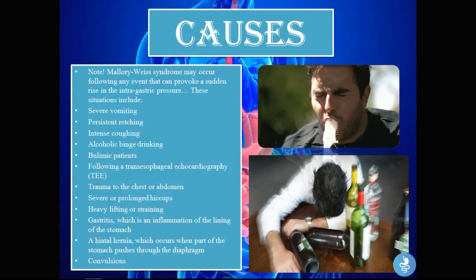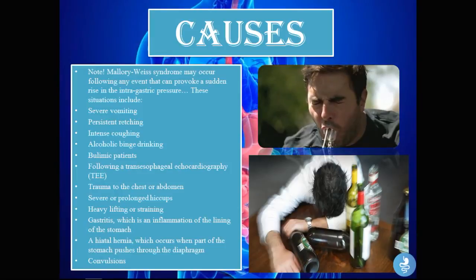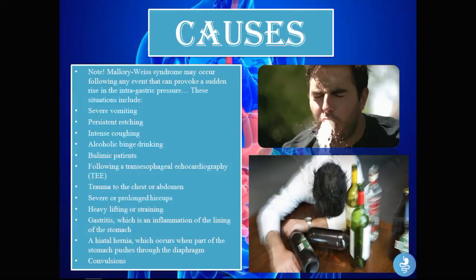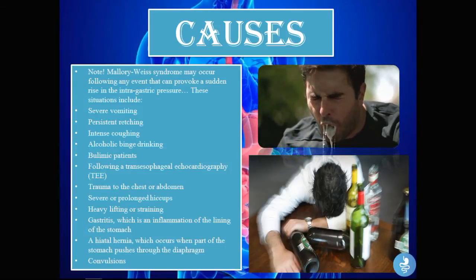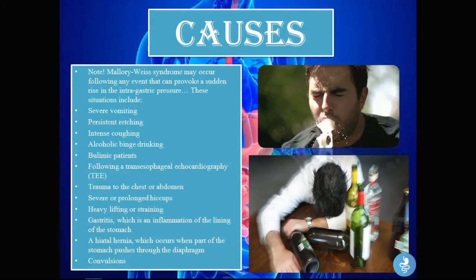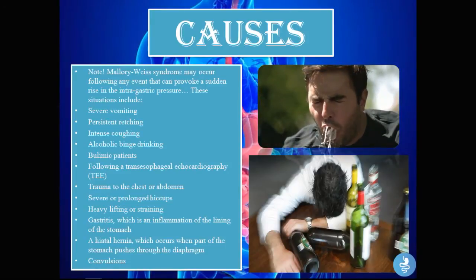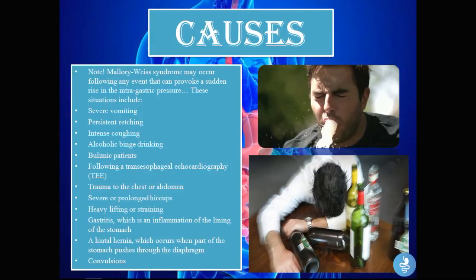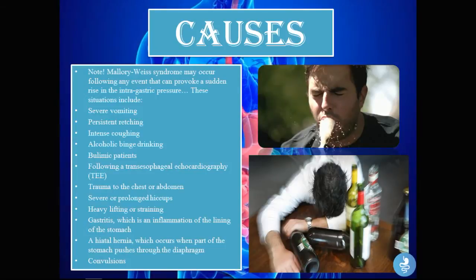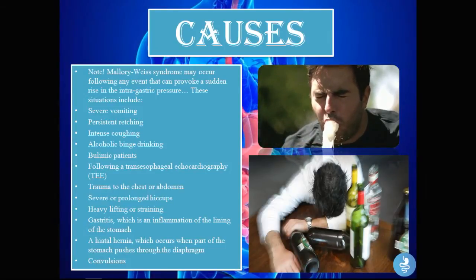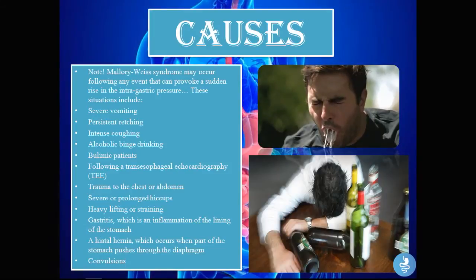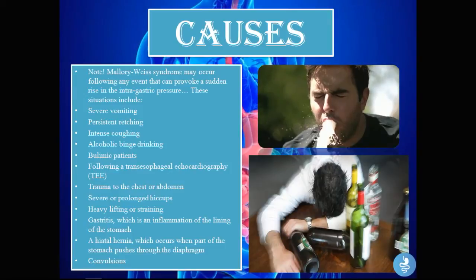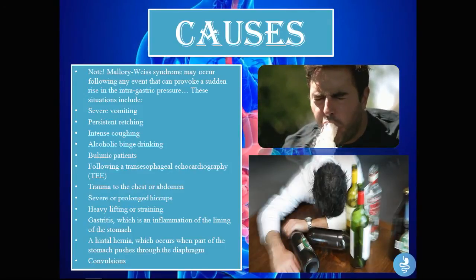Mallory-Weiss syndrome may occur following any event that provokes a sudden rise in intra-gastric pressure. An increase in gastric pressure causes a tear at a weak point in the GI tract, usually at the gastroesophageal junction. Situations that can provoke this include: severe vomiting, persistent retching, intense coughing, alcoholic binge drinking, and bulimic patients.